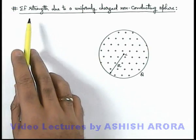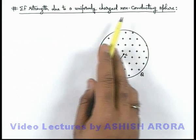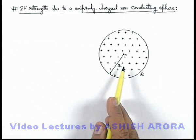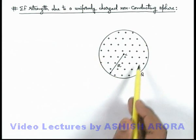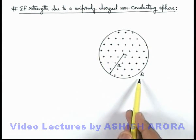Now let's discuss the electric field strength due to a uniformly charged non-conducting sphere. This figure shows a solid sphere of radius R which is uniformly charged with a charge Q.